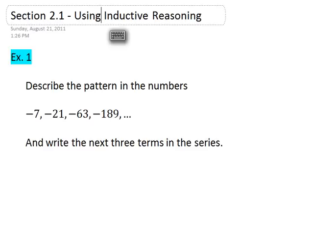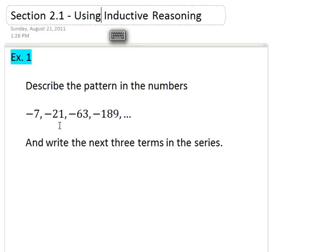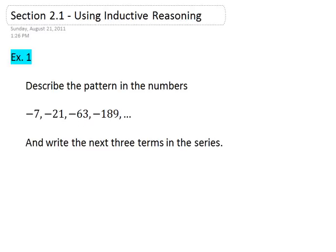In example 1, we have a series of numbers: negative 7, negative 21, negative 63, negative 189. Describe the pattern in the numbers that you see, and then try to write the next three terms in this series. Pause this video if you need to, and then resume once you think you have the pattern and the next three numbers.